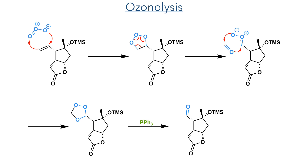The ozone undergoes a 3+2 cycloaddition with the alkene, which then undergoes a cycloreversion and recombines to form an ozonide. This is then reduced with triphenylphosphine to form an aldehyde.